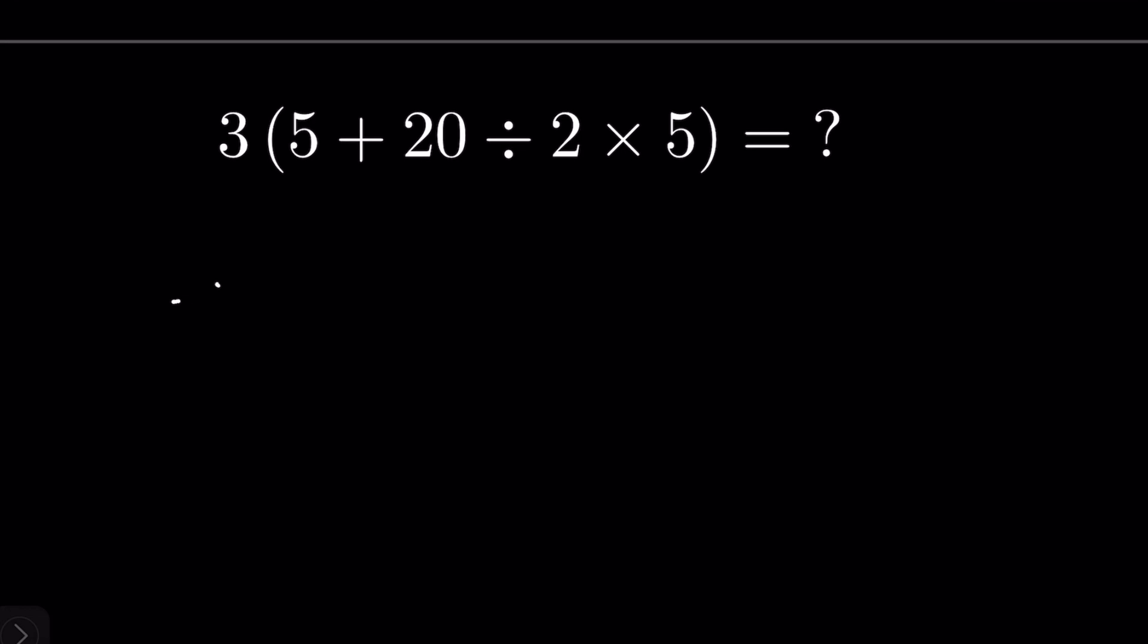Let's solve this question based on order of operations. So first we will solve the bracket, and within the bracket we have to follow the order of operations. So first we will do division: 5 plus 20 divided by 2 is 10 multiplied by 5.